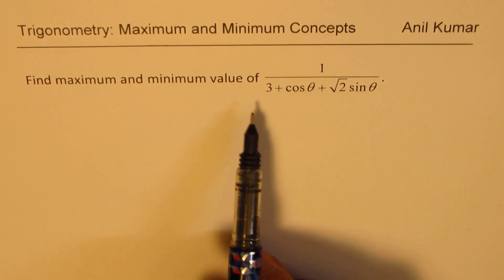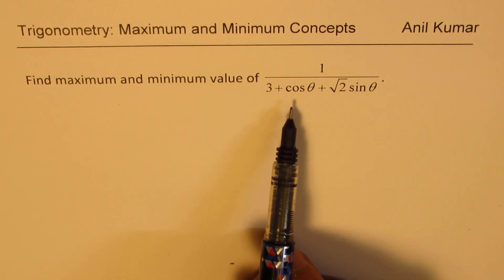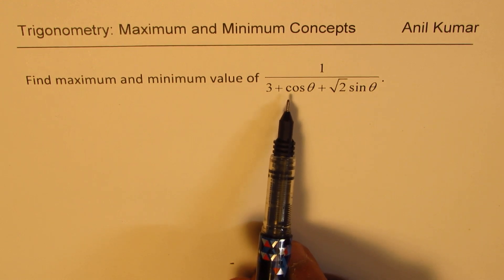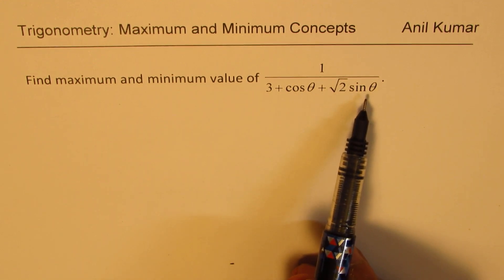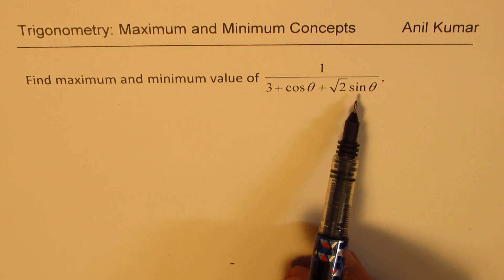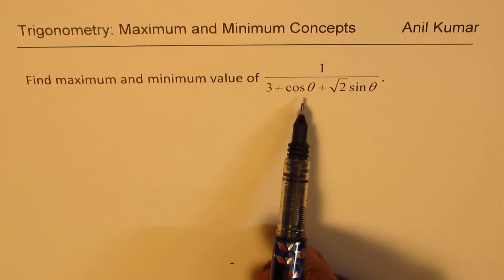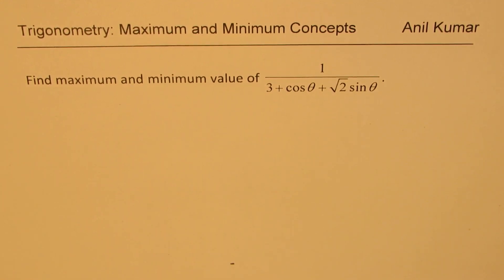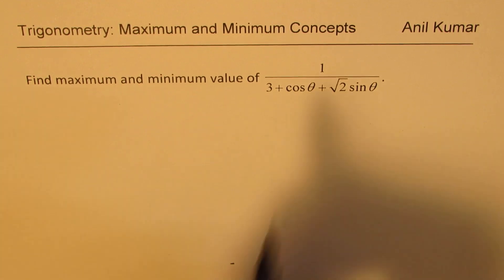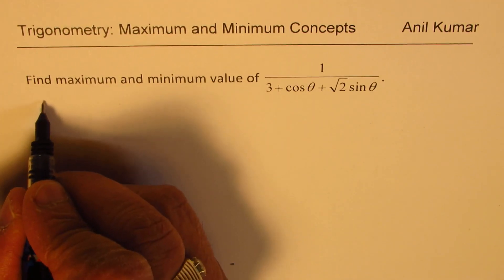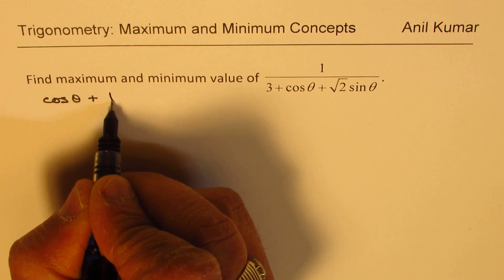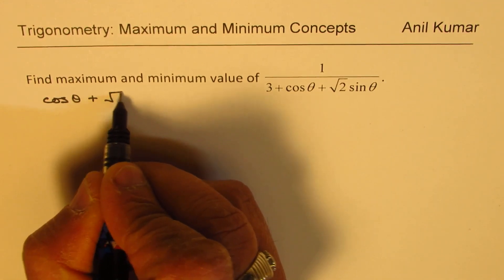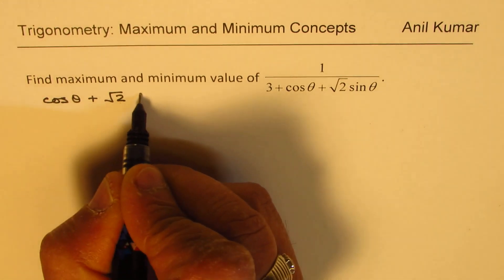Now when you look at this function, one approach could be that the part cos θ plus √2 sin θ could be written in terms of either cosine or sine function. So we will work on this part now — let's work on cos θ plus √2 sin θ.